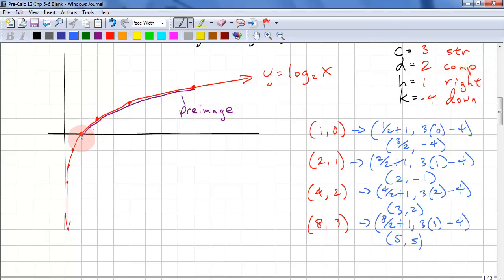So (1, 0) goes to (3/2, negative 4). So 3/2, negative 4, it goes there. (2, 1) goes to (2, negative 1). So that simply goes down to there.